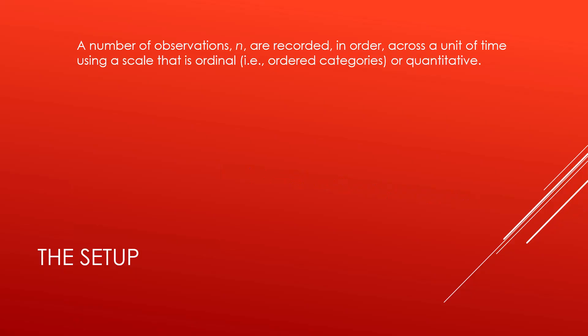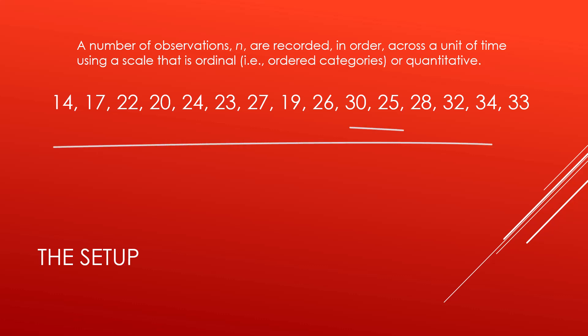Now let's consider how we would set up this test. A number of observations, n, are recorded in order across a unit of time using a scale that is either ordinal (ordered categories) or actual quantities. Here's an example of recording values, in this case 15 of them, that is 15 measurements taken across time given in order starting with 14 moving to 17 and so on all the way to the last measurement of 33.